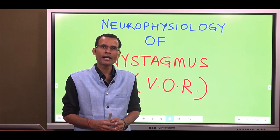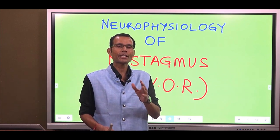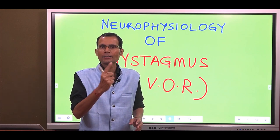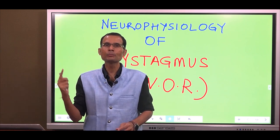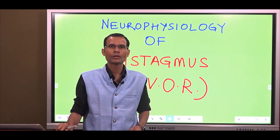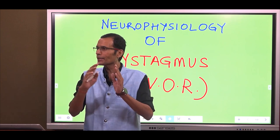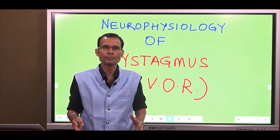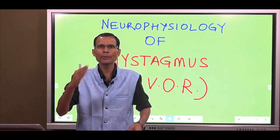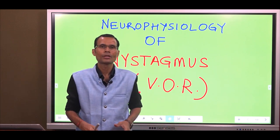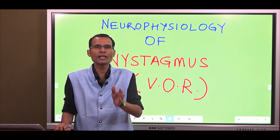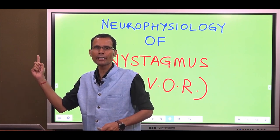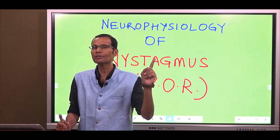Let's start with understanding what happens when the head starts rotating — rotational nystagmus, rotatory nystagmus, and post-rotatory nystagmus. When the head starts rotating in one direction, let's say to the right, if the eyes were to move along with the head, there would be rapid passing of visual scenes across the retina, which is not desirable. So as the head begins to rotate to the right, the eyes slowly rotate to the left in the opposite direction.